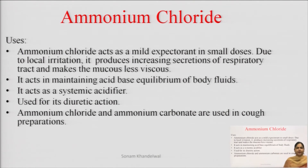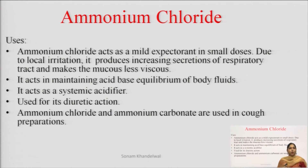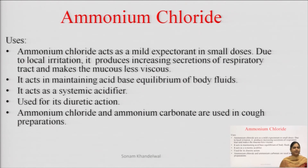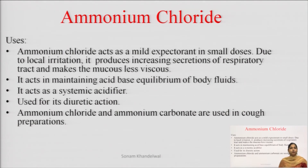Ammonium chloride uses: we use it as a mild expectorant in small doses. Expectorant is what we use for cough treatment. It causes local irritation of the respiratory tract, which increases secretions. The mucus becomes less viscous — the cough is very viscous, so with local irritation the mucus becomes less viscous and is easily removed. Next, acid-base equilibrium of our body fluids is maintained. It works as a systemic acidifier. We also use it for diuretic action — diuretics increase the excretion of urine. In addition to this, ammonium chloride and ammonium carbonate are used in cough preparations.